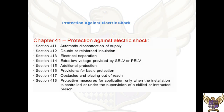Chapter 41 has various sections and the following information is contained within it. Section 411 refers to automatic disconnection of supply, 412 is double or reinforced insulation, and 413 is electrical separation, and so forth. Please make sure that you go through the chapter sections and become familiar with them.